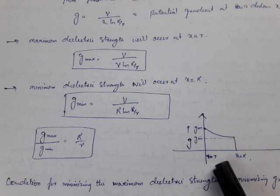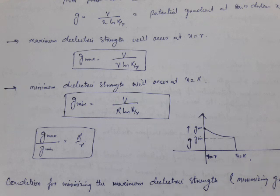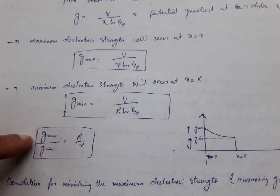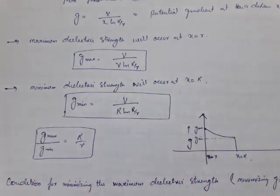This is the variation of electrical stress from the surface of the conductor to the sheath — the variation along the dielectric. Just as we see potential distribution along an insulated string from conductor to tower, here we see the potential distribution in the dielectric from the conductor surface to the inner radius of the sheath. The ratio G_max to G_min equals R divided by r.